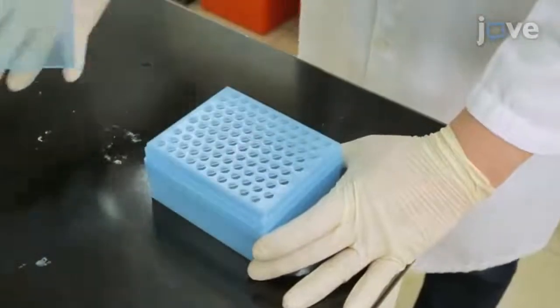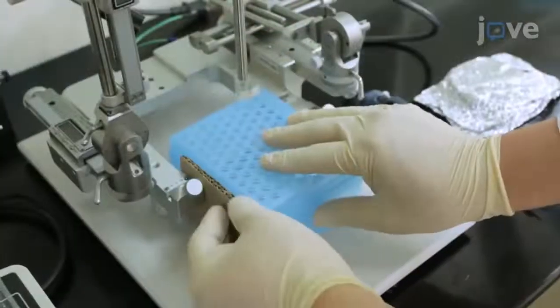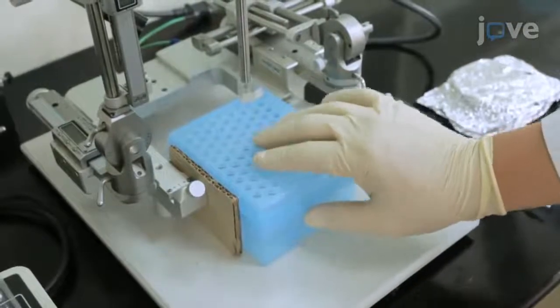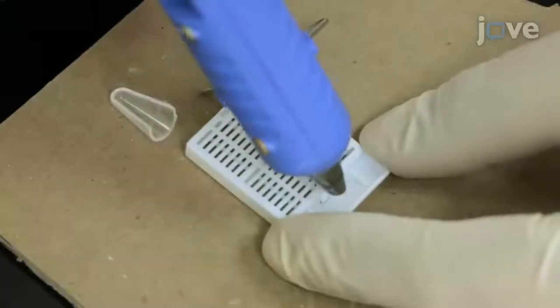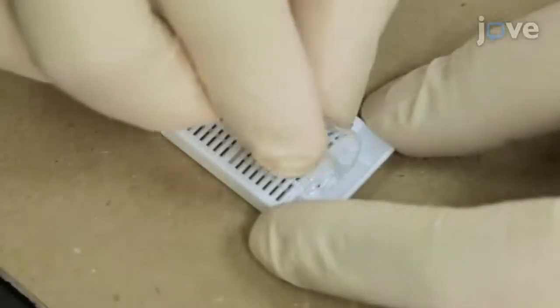Next, select an empty pipette tip box that fits the pedestal of the stereotaxic apparatus. Then, use hot glue to secure the head tray to the base of the tip box.